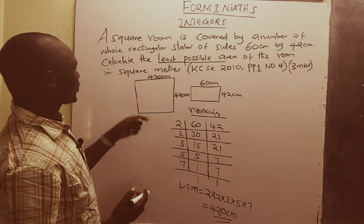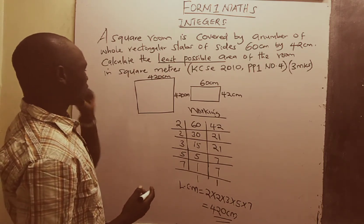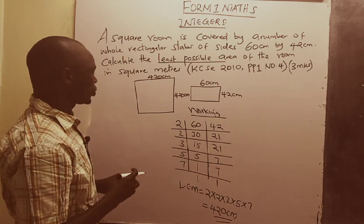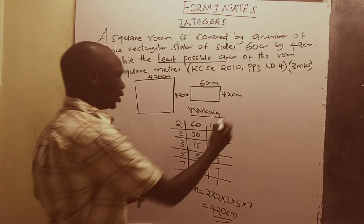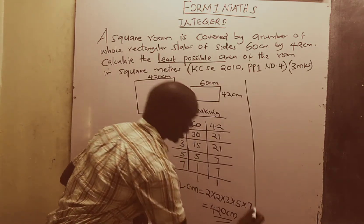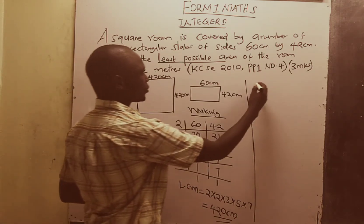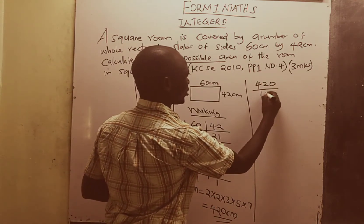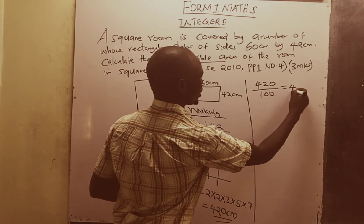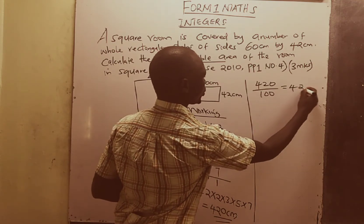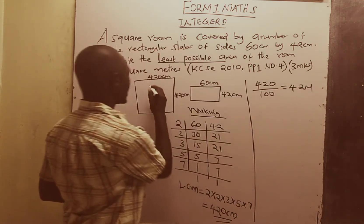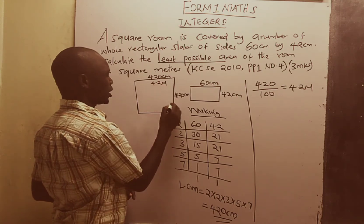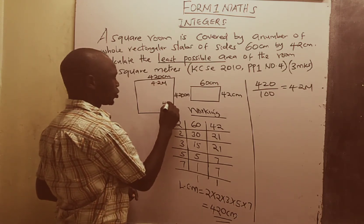Since we are supposed to calculate the area in square meters, we can change this into meters. We know that if you take 420 centimeters and divide by 100, this gives us 4.2 meters. Therefore this side is 4.2 meters, and this side is also going to be 4.2 meters.